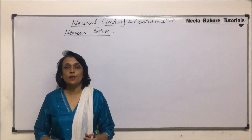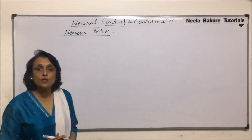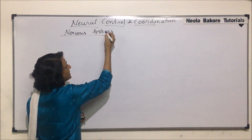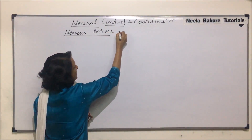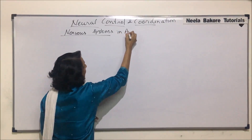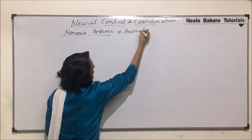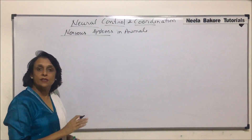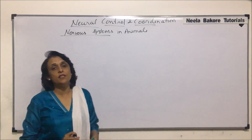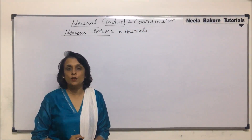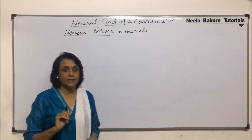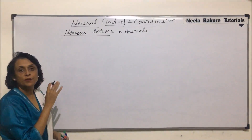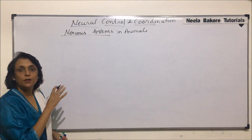We will now discuss the nervous systems in various animals. After we are done with all other animals, we will start with the nervous system in case of human beings. Amongst animals, we are talking about invertebrates first.